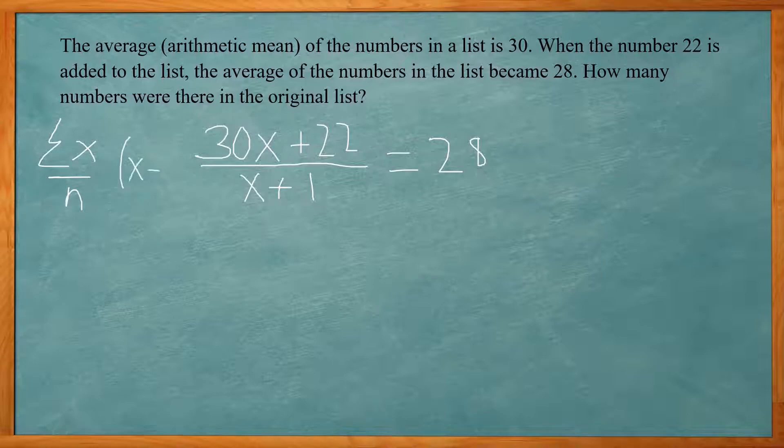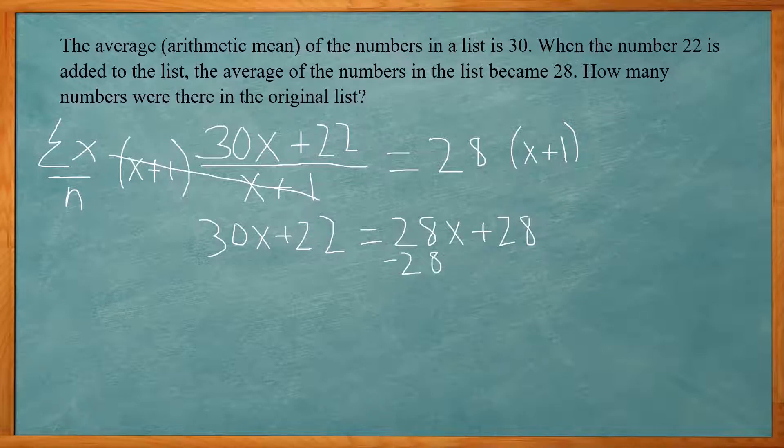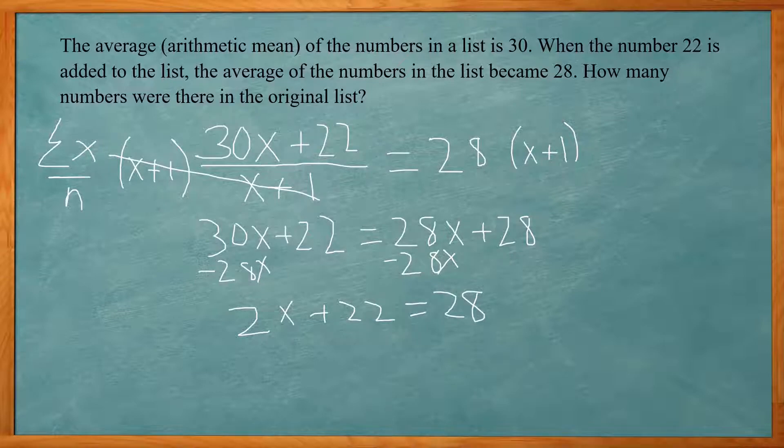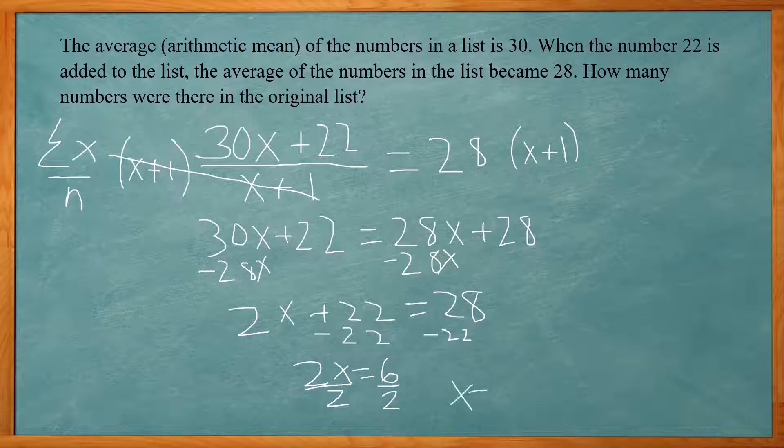So I'm going to multiply both sides by x plus 1. And I'm going to cancel out here. 30x plus 22 and I'm going to distribute the 28. So I get 28x plus 28. And I'm going to subtract 28x from both sides. So 2x plus 22 equals 28. And I can subtract 22 from both sides. So 2x equals 6. Then divide both sides by 2. And x is equal to 3. So there was three numbers in the original list.